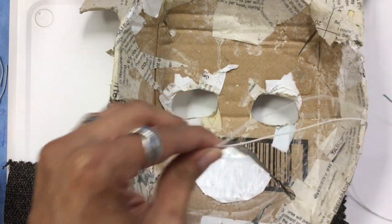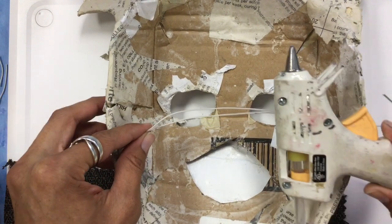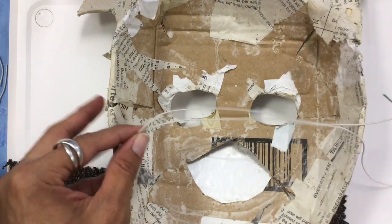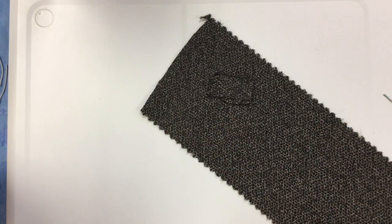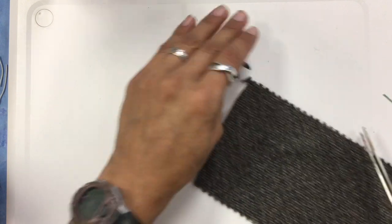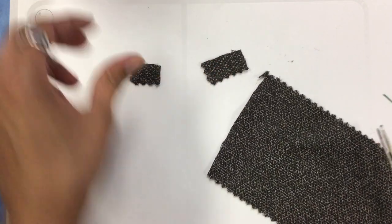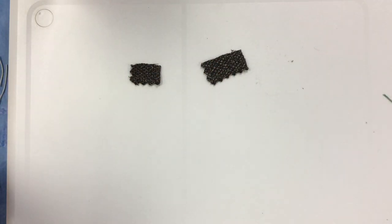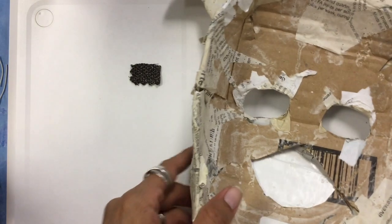I already cut my string and have the glue gun heating up. From this fabric, I cut two little pieces. There's my two pieces of fabric, and I'm going to get my mask.